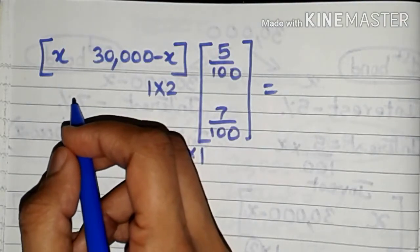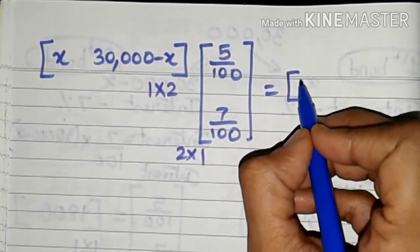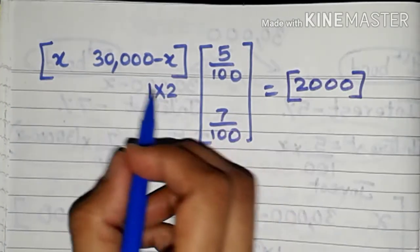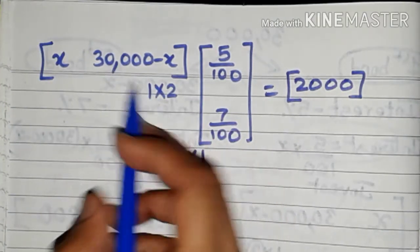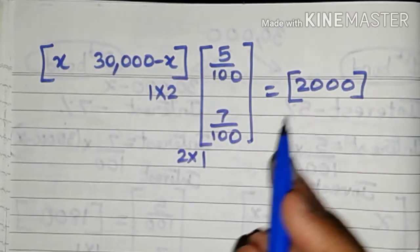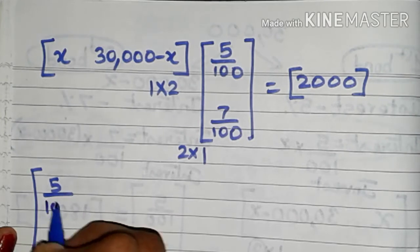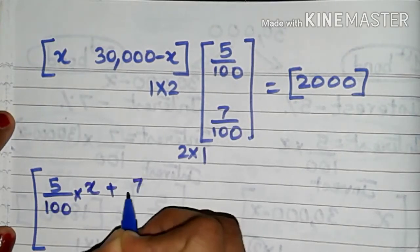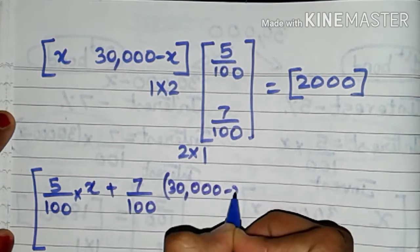In part (b) of the 19th question, the total annual interest is 2,000 and again we have to find how 30,000 is invested in both bonds — that is, find x where the interest is 2,000. Let us again do the matrix multiplication: 5/100 times x plus 7/100 times (30,000 minus x).